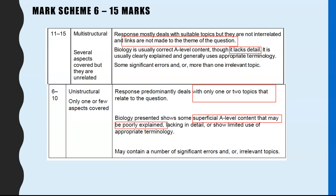Diffusion is a good example. Students might write about oxygen diffusing into the bloodstream from the alveoli because of the concentration gradient, and that it's important for respiration. All of that you knew at GCSE — it's nowhere near enough detail. It's poorly explained, so that would count as superficial A-level. Towards the end of the video, I'll go through how you could bump that up to make it much more detailed and A-level standard.